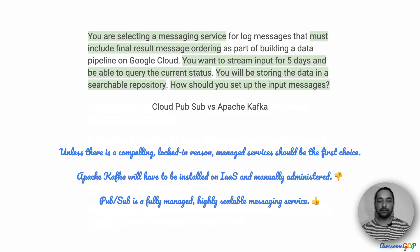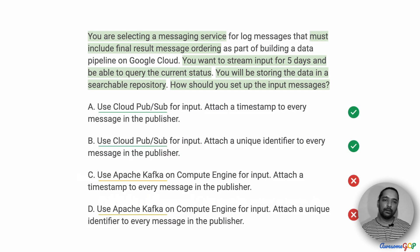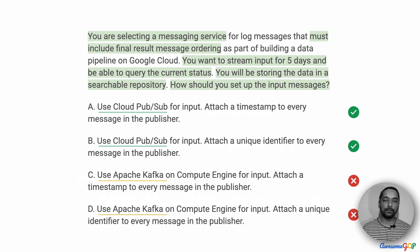Cloud Pub/Sub, on the other hand, is a fully managed, highly scalable messaging service provided by Google Cloud itself. So between the two, Cloud Pub/Sub should be a first choice because there is no particular requirement that we have to stick with Kafka. Among the options, we can eliminate options C and D which use Apache Kafka, and retain options A and B which use Cloud Pub/Sub.